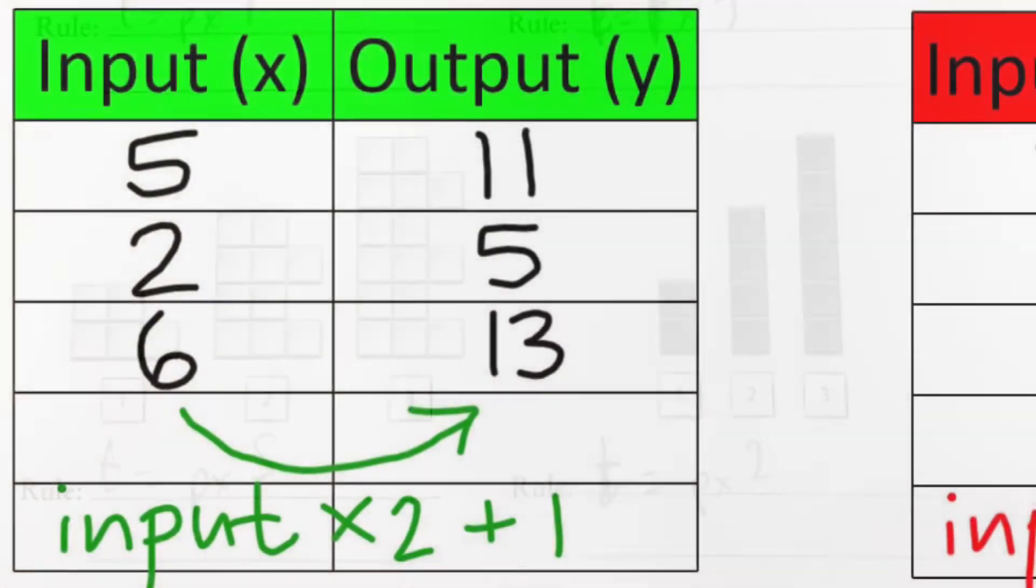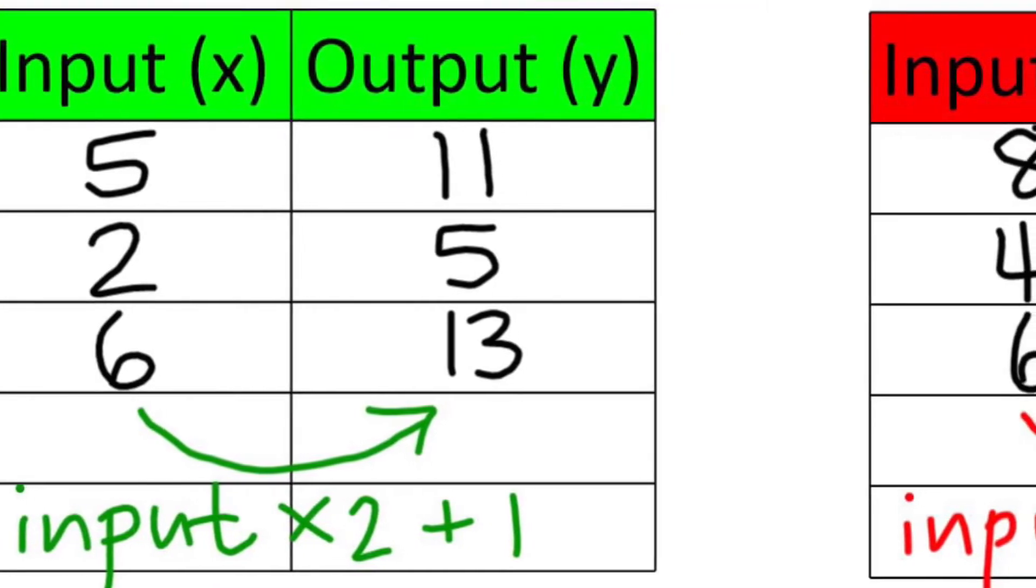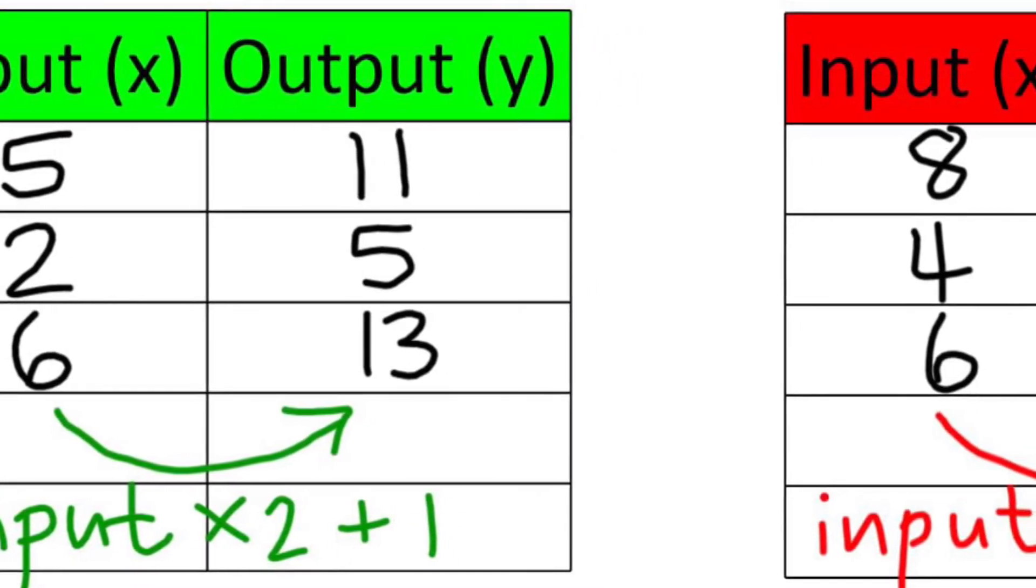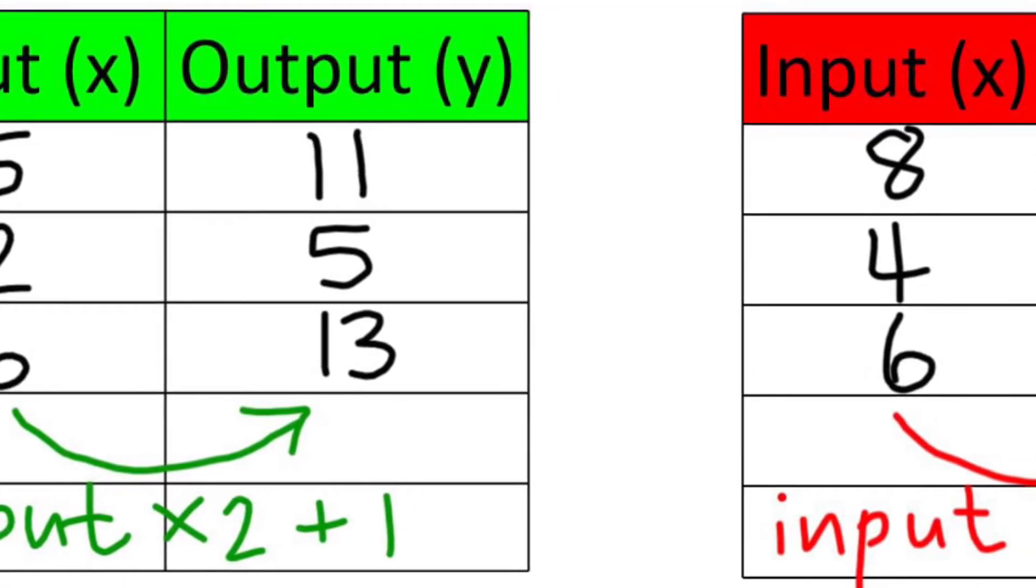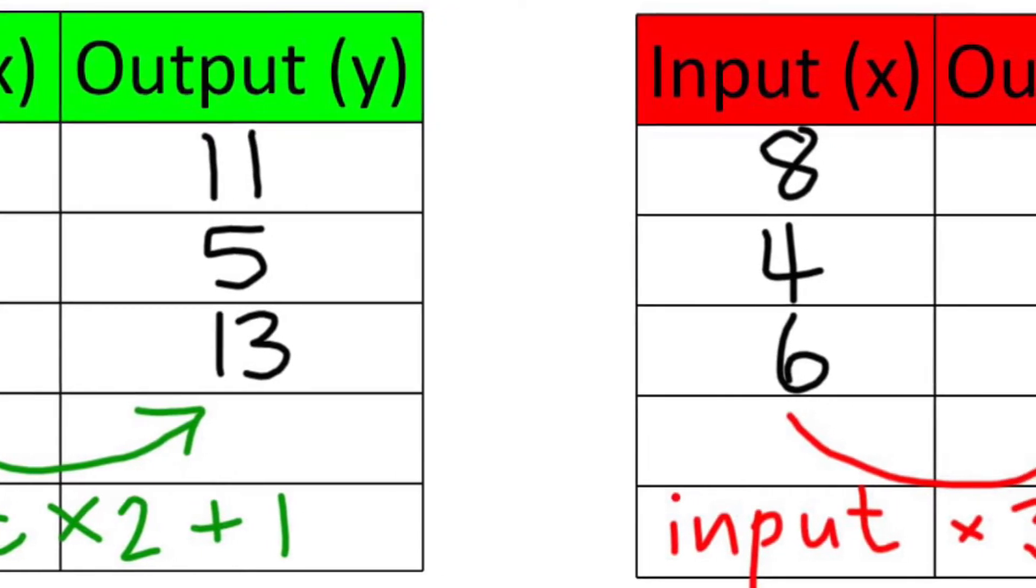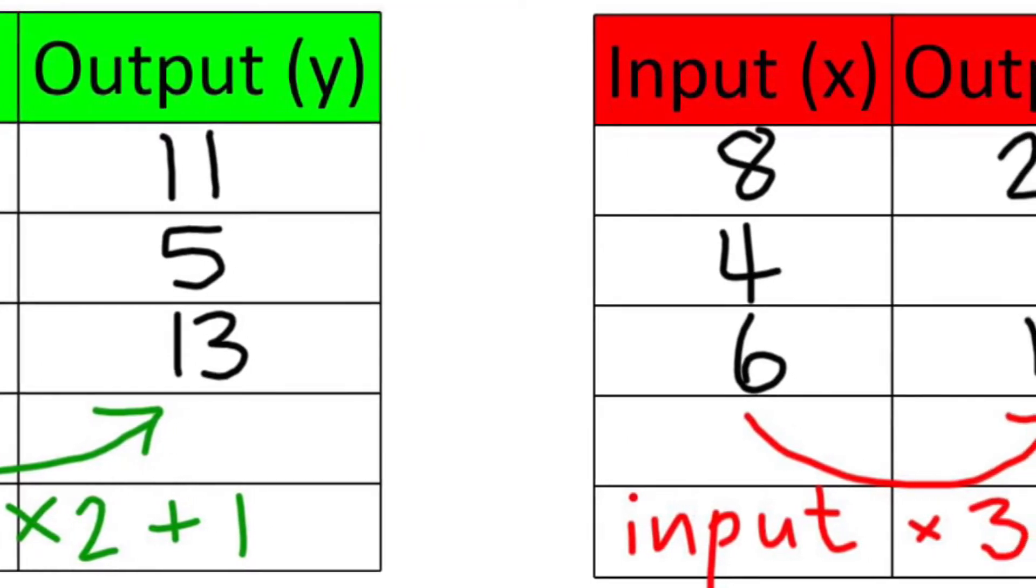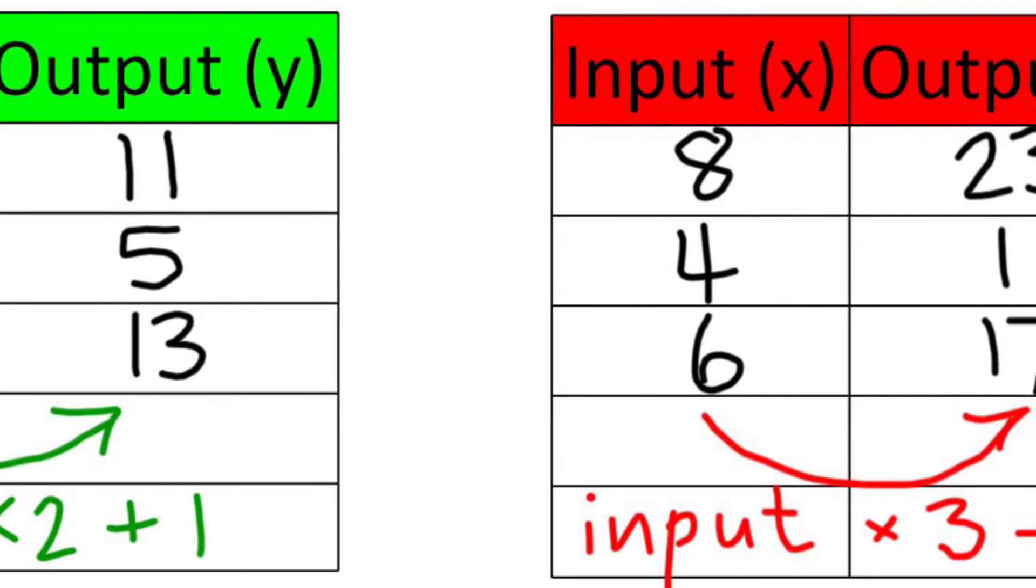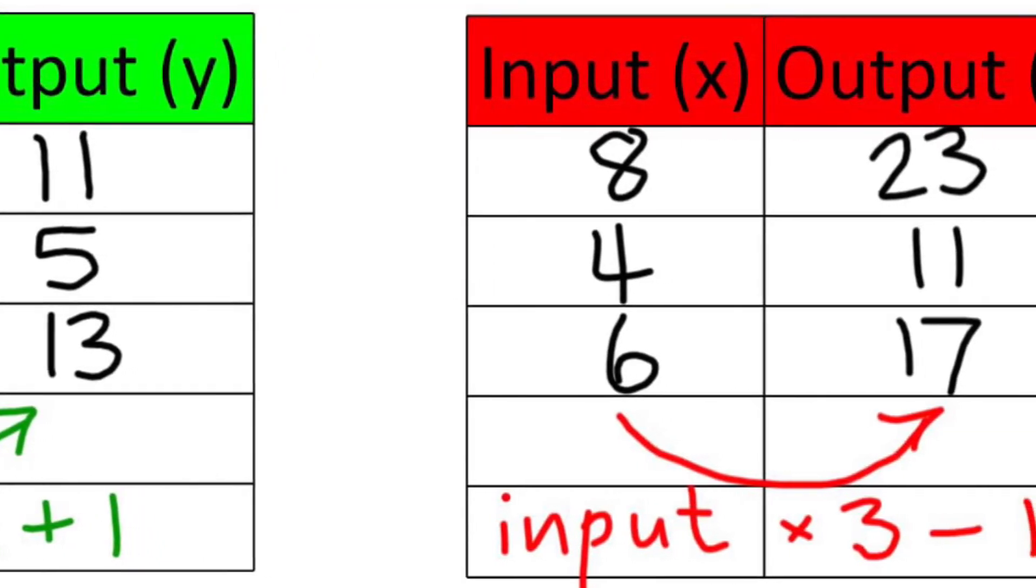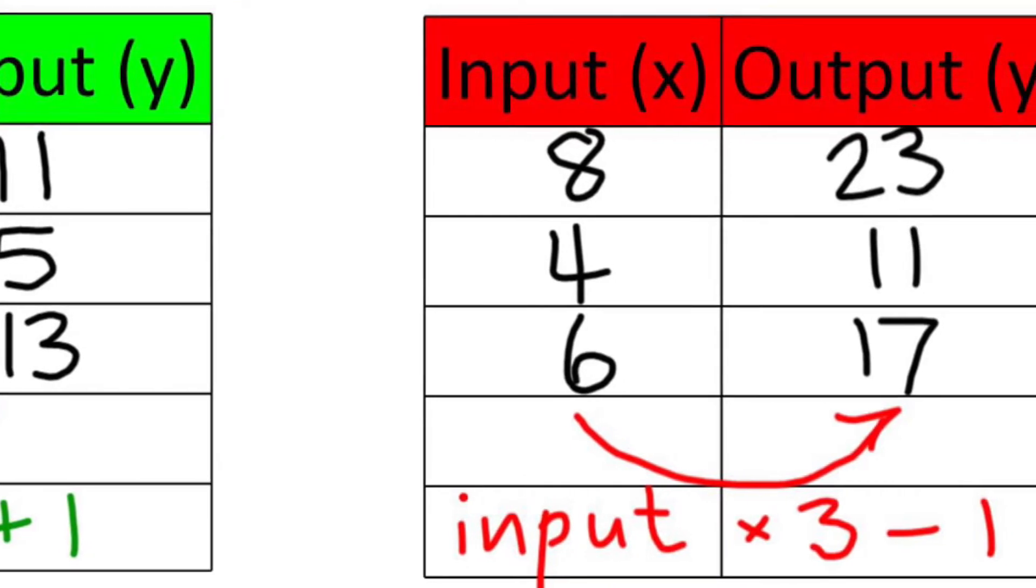Once students were comfortable with multiplication rules, we upped the ante a little bit and played the input-output game, but we had pattern rules that involved a multiplication, so the multiplier, and something that we added, which we started calling the constant at the beginning. It only took about three rounds of this game for students to become quite proficient at figuring out the multiplier and the constant in each of our rules.